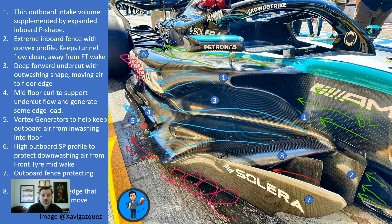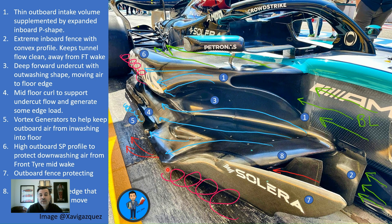These vortex generators and the physical phenomenon behind them are very well known. You're generating small vortices that rotate — if looking from forward to back, in a clockwise rotation — and they travel all the way down the floor edge. What isn't entirely clear is whether these vortices are ingested into the floor along the edge to create edge load, since the core of a vortex is low pressure, or whether they're simply riding along the edge to discourage front tire wake from entering the mid-floor.